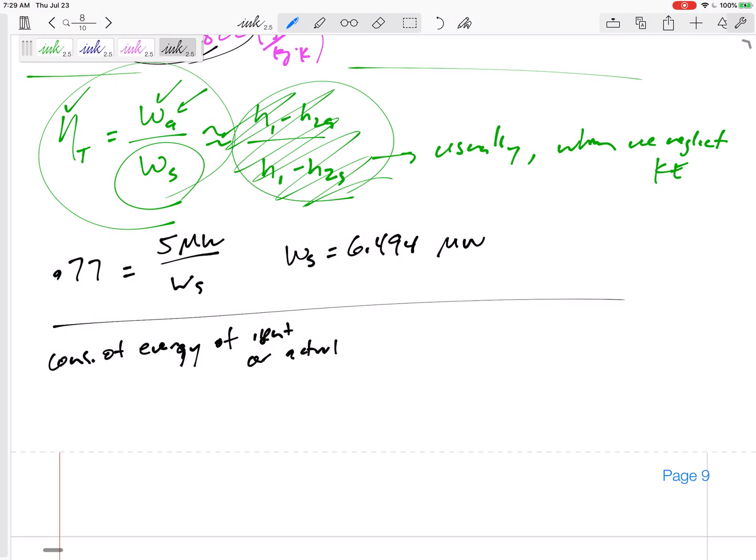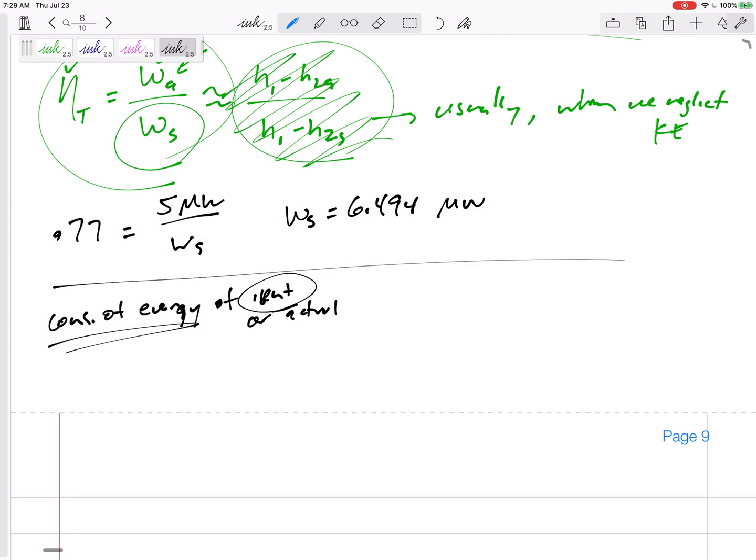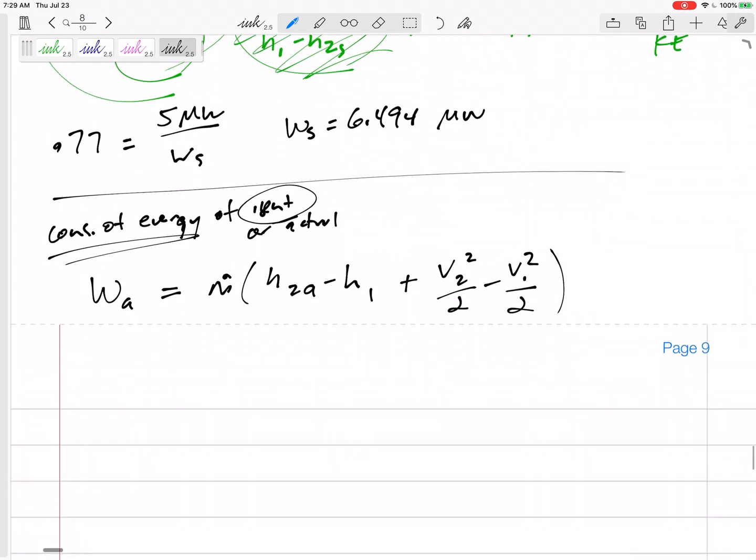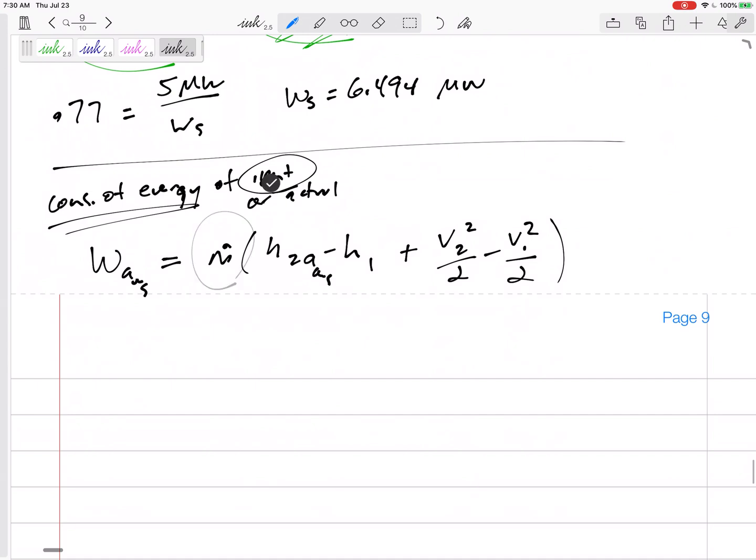Isentropic conservation of energy equation: the work isentropic—there's no Q—equals m dot times (h2 isentropic minus h1 plus v2 squared minus v1 squared over 2). Let's do isentropic first because we have this h2 isentropic; use that to get the mass flow rate.